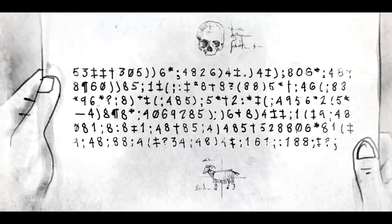Now look at the very beginning of the message. See the combination: 53, double cross, double cross, cross. We know that three, double cross, double cross, cross are G-O-O-D. So we guess that the first letter is A, and that the first two words of the message are A GOOD. Now we have quite a few letters, so we can write down our key in a table to avoid confusion. Legrand was writing: five represents A, cross represents D, eight represents E, three represents G, four represents H, six represents I, asterisk represents N, double cross represents O, open parentheses represents R, semicolon represents T, question mark represents U.